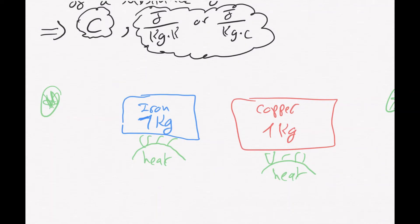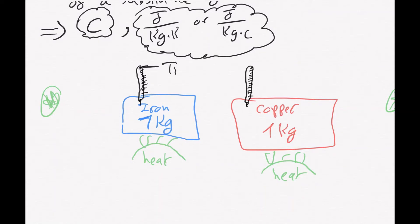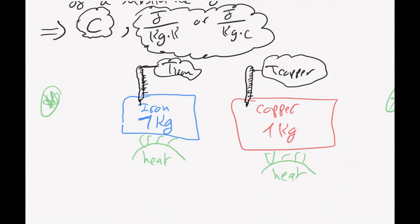If I place a thermometer in each, do you think that if I subject them to the same amount of heat for the same period of time — iron on the left and copper on the right — the temperature reading after, say, one hour would be the same? Of course not. The temperature would be different because the material is different and they respond differently to heat. Iron absorbs heat in a different way than copper absorbs and responds to heat.